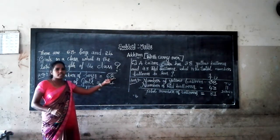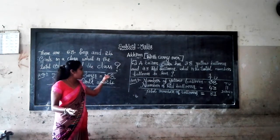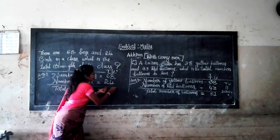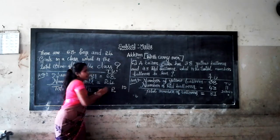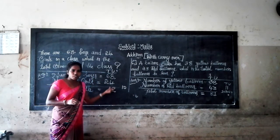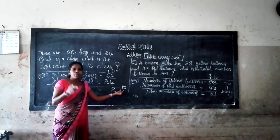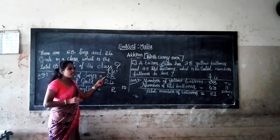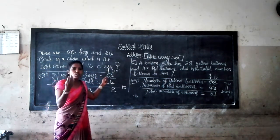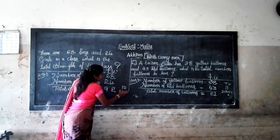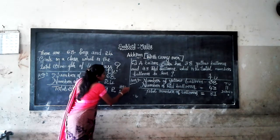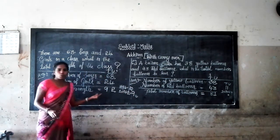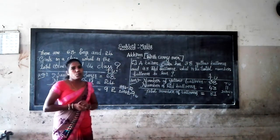In 68, there are 6 tens and 8 units. In 24, there are 2 tens and 4 units. First we add the unit place numbers. 8 plus 4 equals 12, a two-digit number. We write 2 below the unit place and carry 1 to the tens place. 1 plus 6 plus 2 equals 9. So total strength of the class is 92.